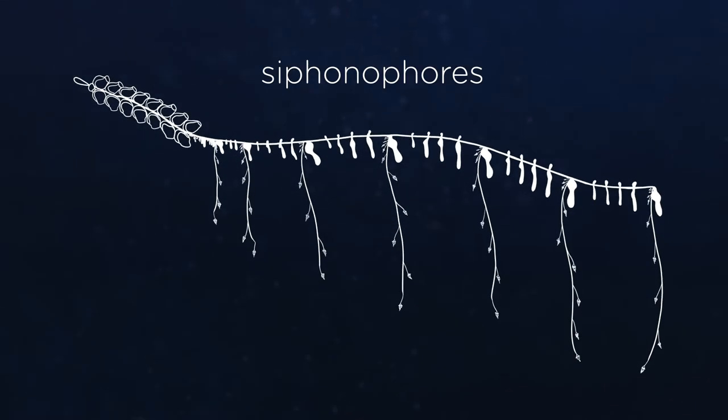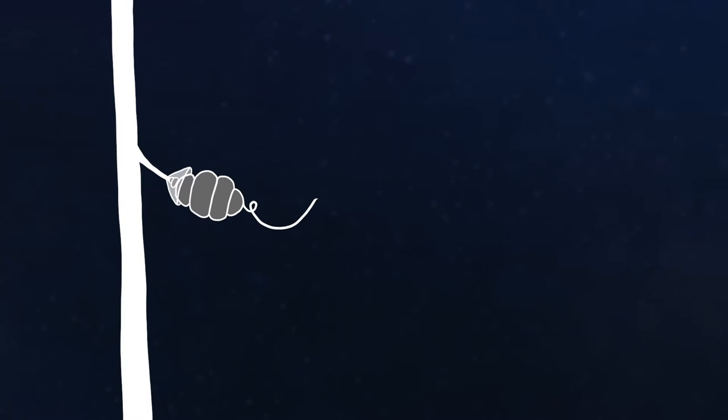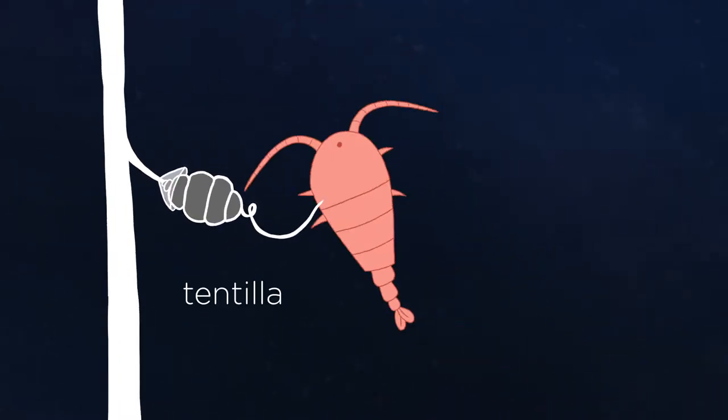Siphonophores form long chains of conjoined, specialized bodies that work together as a single animal. Their tentacles bear complex side branches called tentilla, which they use to capture prey.